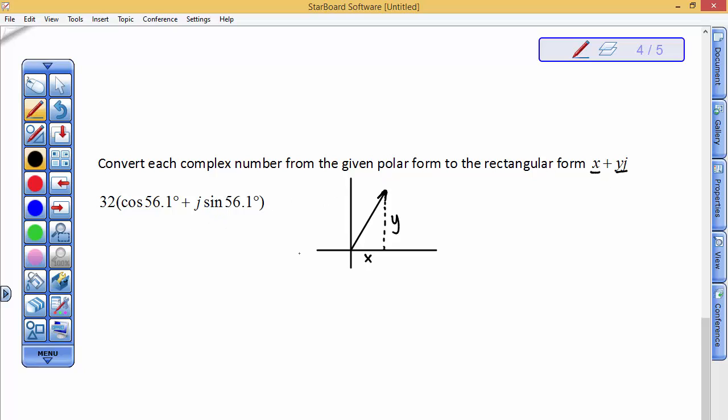Well, all you do to get x is you take 32 times the cosine of 56.1. That will give you the x value. And then to get the j value, you'll take 32 times the sine of 56.1. Let's check those out.